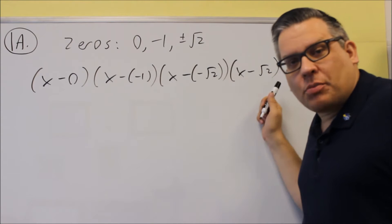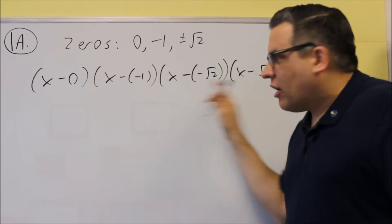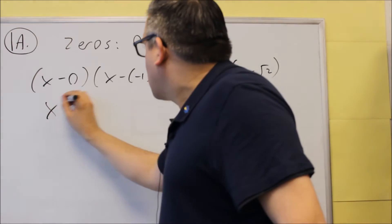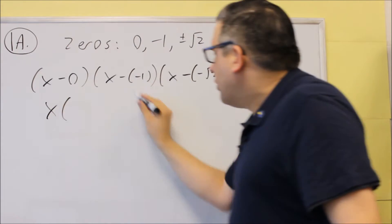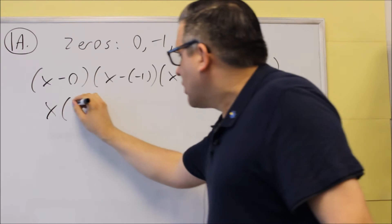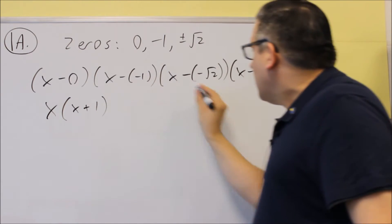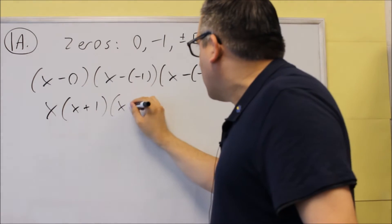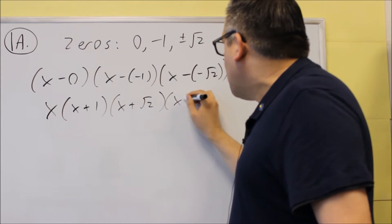Okay, so subtracting the negative 1 and the positive 1. Now I need to clean this up a little bit. So this first one, this is x, and then negative negative gives you a plus, x plus 1. And then for these, I get x plus square root of 2, x minus square root of 2.